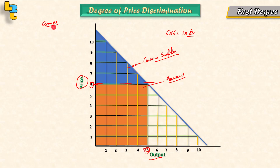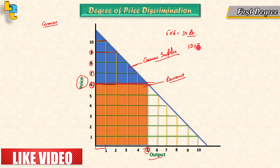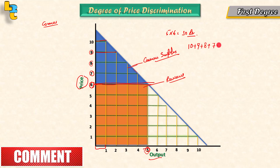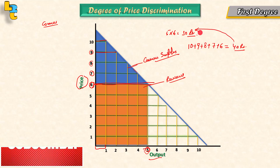Consumer surplus is the difference between what the consumer is willing to pay and what they actually pay. For example, for the 1st unit the consumer is willing to pay 10 rupees, for the 2nd unit 9 rupees, for the 3rd unit 8 rupees, for the 4th unit 7 rupees, and for the 5th unit 6 rupees. The total is 40 rupees, but the producer charges 30 rupees, so consumer surplus is 10 rupees.